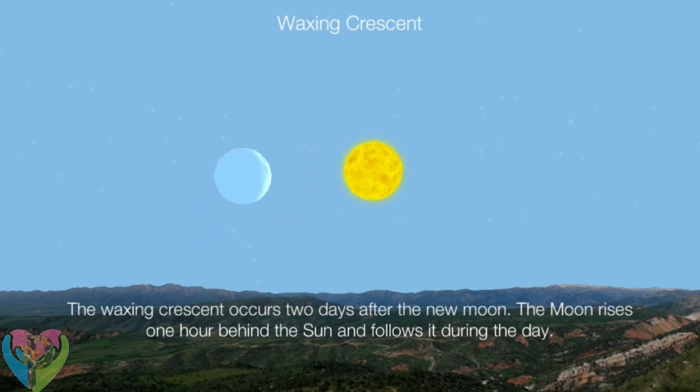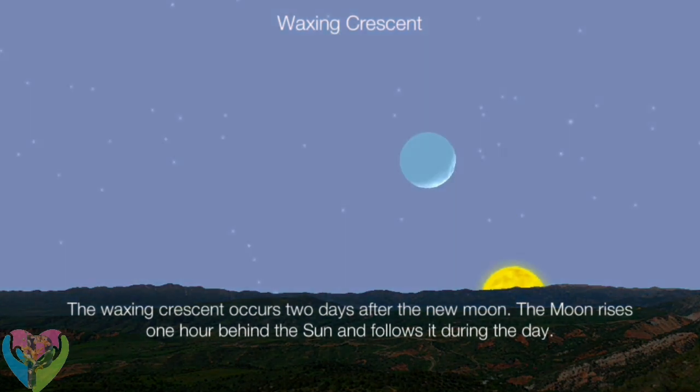The waxing crescent occurs two days after the new Moon. The Moon rises one hour behind the Sun and follows it during the day.